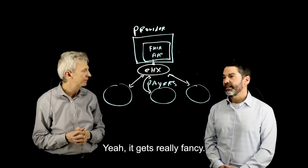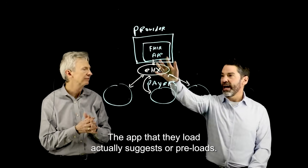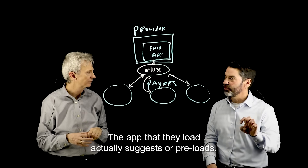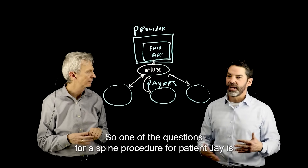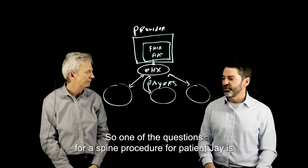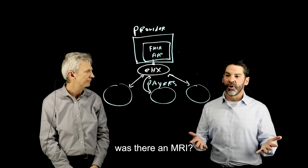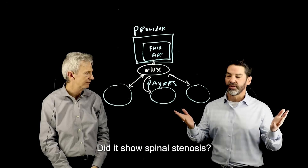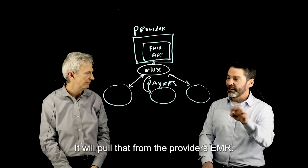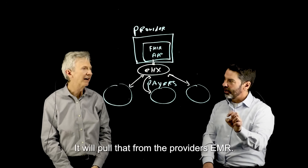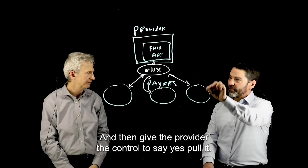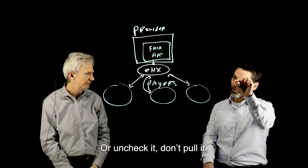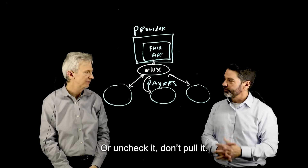It gets pretty fancy. The app that they load actually suggests or preloads answers. So if one of the questions for a spine procedure for patient J is, 'Was there an MRI and did it show spinal stenosis?' — it will pull that from the provider's EMR. Then it gives the provider the control to say yes, pull it and check it, or uncheck it and don't pull it.